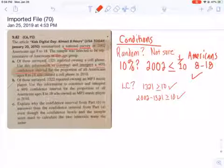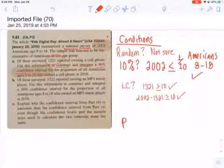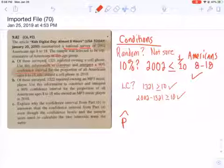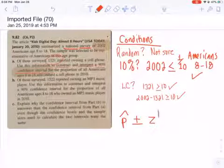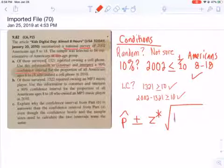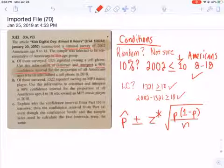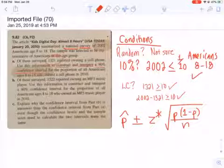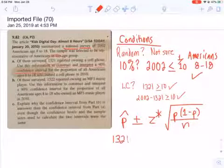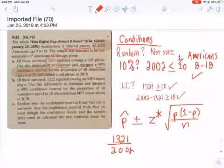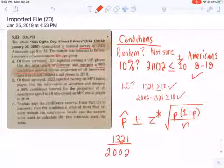So now I want 90% confidence intervals, so I'm going to write out my formula here. I'm going to take p-hat, which is the statistic I find here. I'm going to add or subtract critical z times standard error, which in this case is going to be p-hat times 1 minus p-hat over the size of my sample. So we'll plug in what we know. We have 1,321 over 2,002—that's going to give me a proportion.